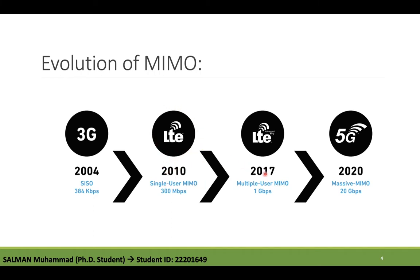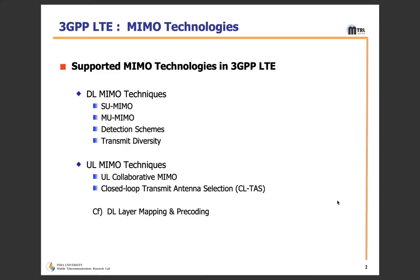The difference between 2010 and 2017 MIMO is the move from Single-User MIMO to Multi-User MIMO. Single-User MIMO could handle a certain throughput, but Multi-User MIMO is capable of up to 1 Gbps data rate. More recently, 5G introduced Massive MIMO with throughput as large as 20 Gbps.